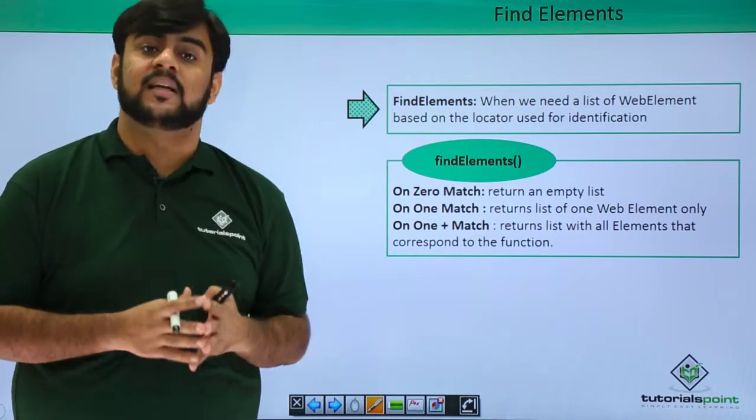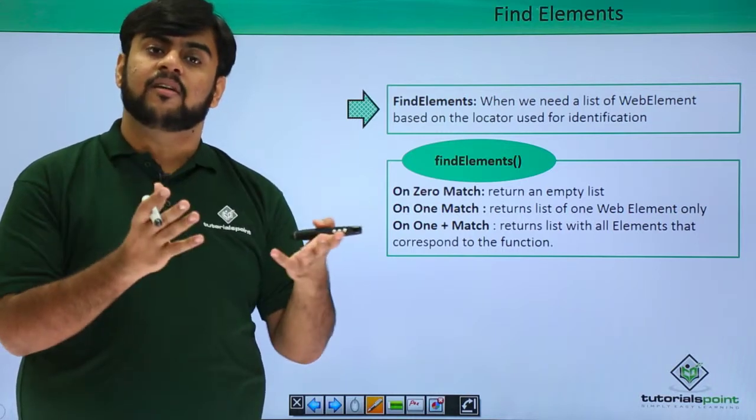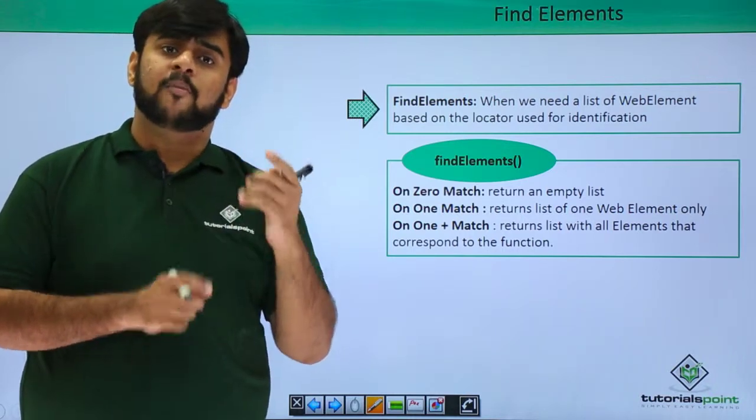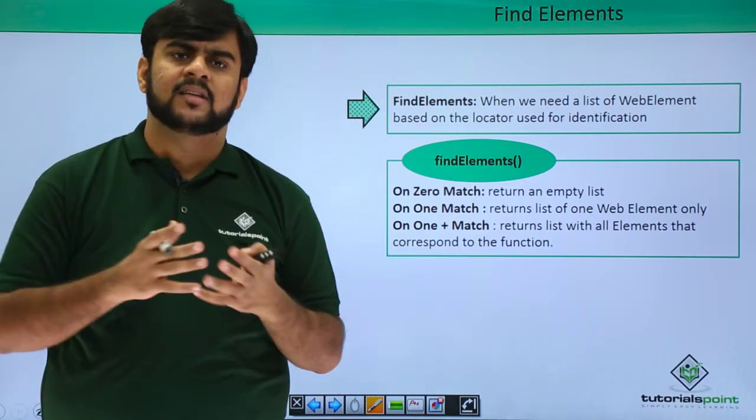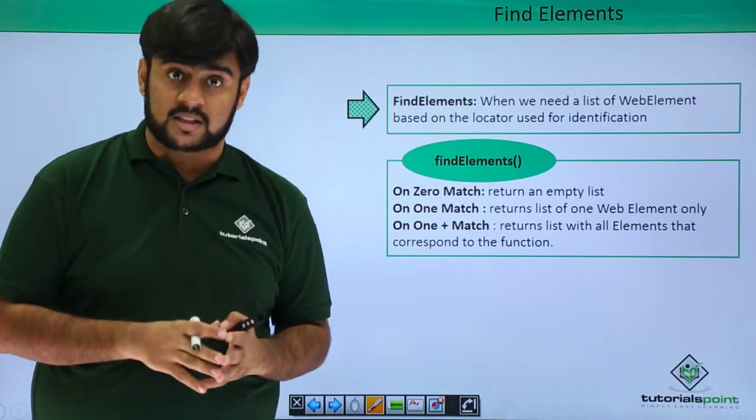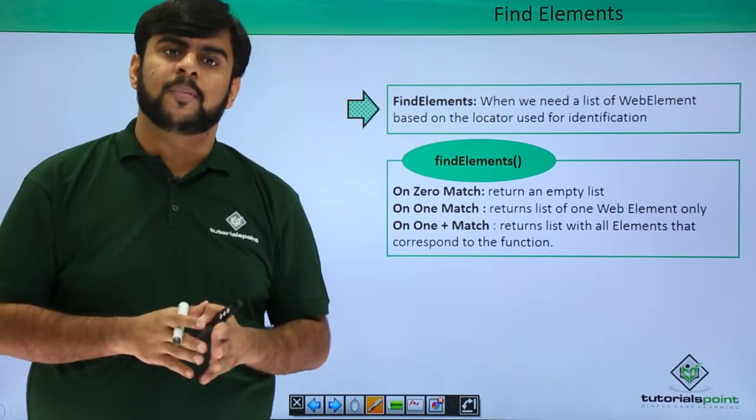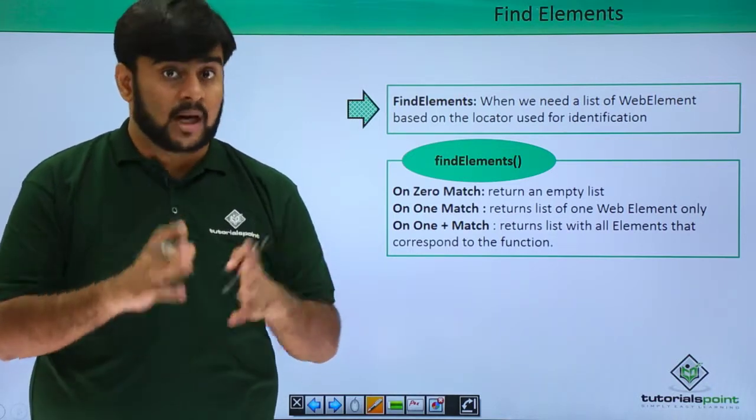What do we mean by a list? List would be like if we have found five web elements with the same ID that we passed, then we would be having a list of web elements. We can name it as, say, xyz list. So, xyz list would be having the length of the list would be whatever are the web elements with the same property on that particular page.